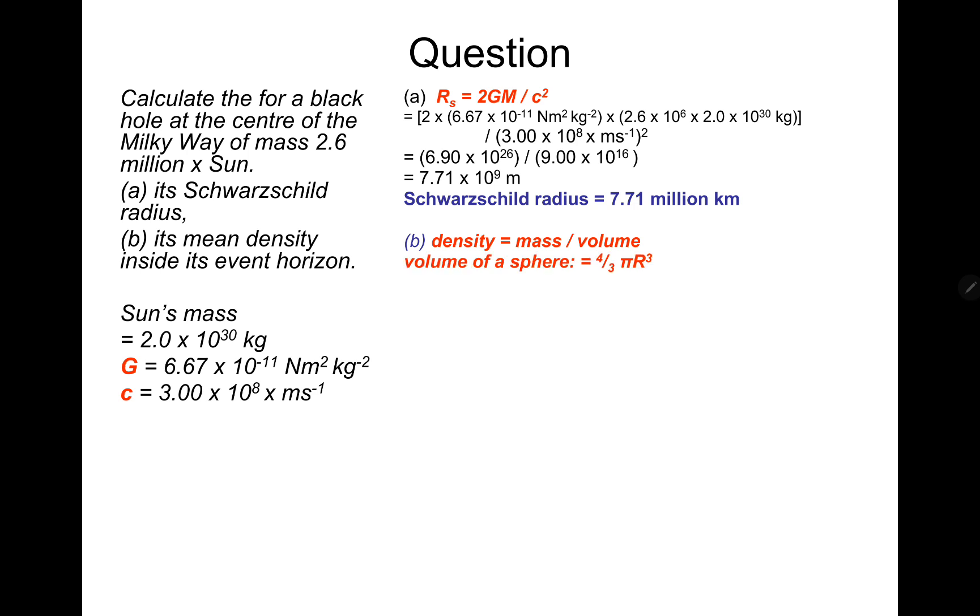Density, same as last time, so we need the volume, 4/3 pi r cubed. Put the numbers in, use the answer from above, 7.71 times 10 to the 9 meters. Cube that, times it by 4/3 pi. You get a volume of 1.92 times 10 to the power of 30 cubic meters.